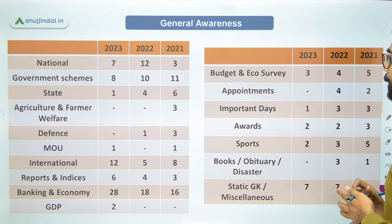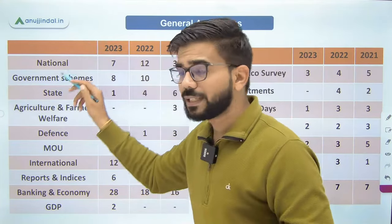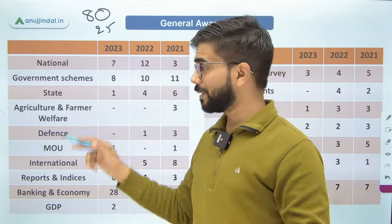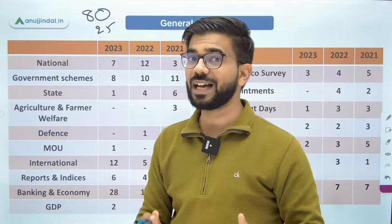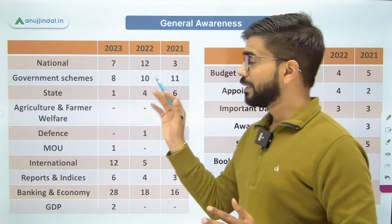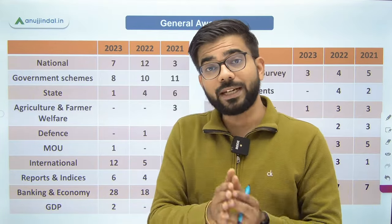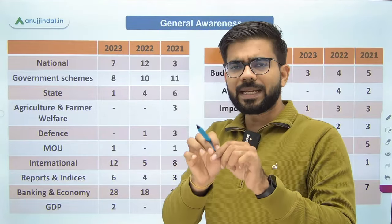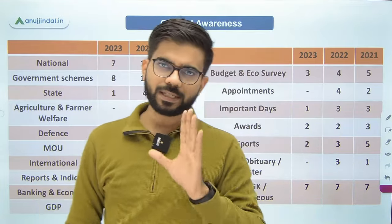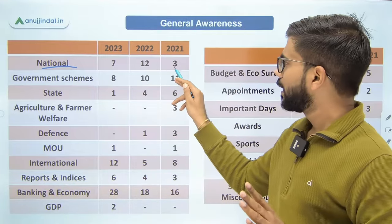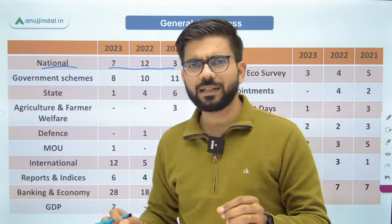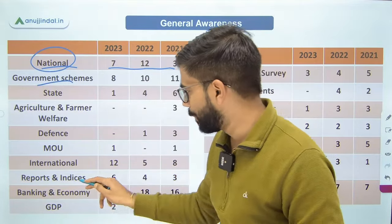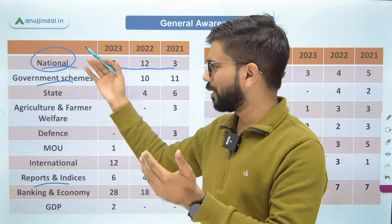At last, the General Awareness section — its weightage is very high. Out of 280 questions, 80 are from GA, and you get 25 minutes for them. If you gave the 2023 paper, you would have seen the questions were very very lengthy and time-consuming — not one-liner questions in RBI. In GA it is very difficult to put a question in any watertight compartment, because a national news question can also appear under government schemes, or under reports. These categories are not rigid.